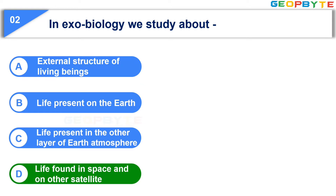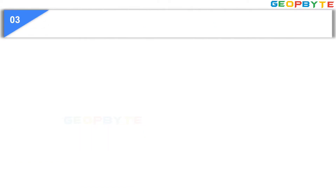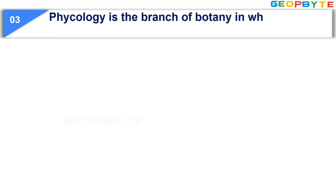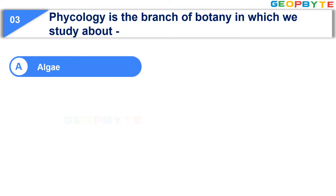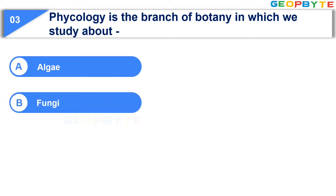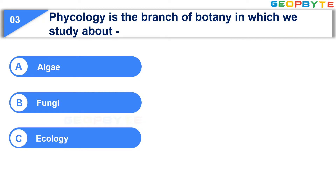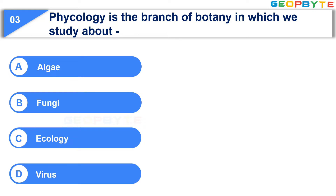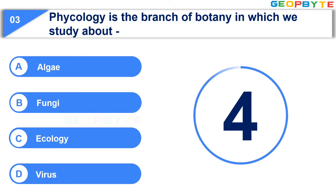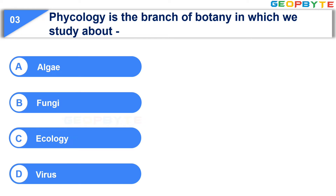The third question is: Phycology is the branch of botany in which we study about. Option A: Algae. Option B: Fungi. Option C: Ecology. Option D: Virus. Your time starts now. Your time is up and the correct answer is Option A: Algae.